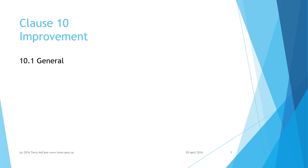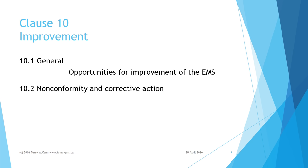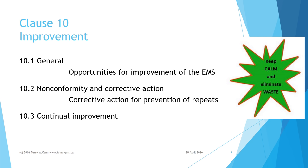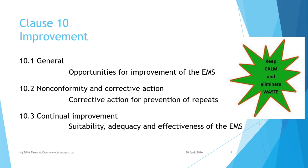Clause 10 requires the organization to determine opportunities for improvement of the EMS and take necessary actions after evaluation. When a non-conformity occurs, you have to control and correct it and deal with any immediate consequential environmental impact. Once contained and impact addressed, you are required to evaluate the need for corrective action to eliminate whatever caused the non-conformity and prevent similar potential non-conformities from occurring. Finally, the organization is required to take steps to continually improve the suitability, adequacy, and effectiveness of the EMS.